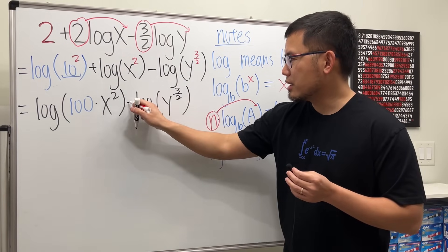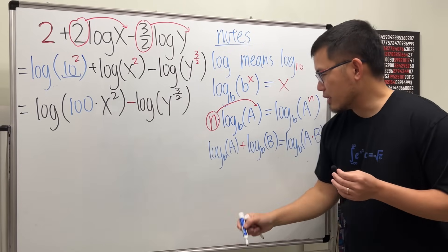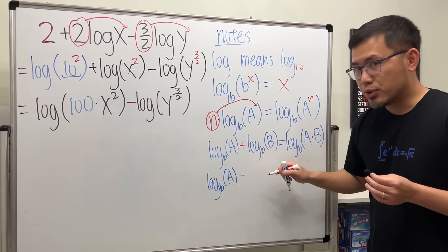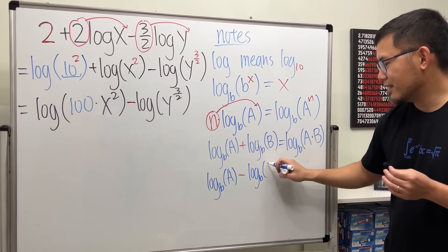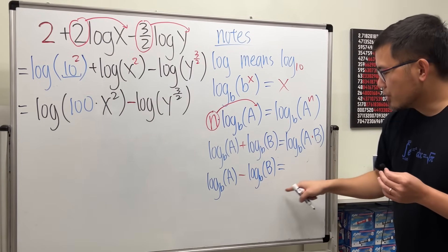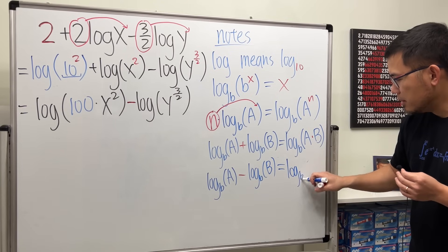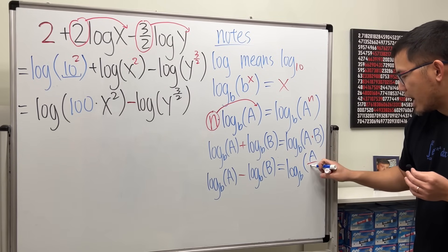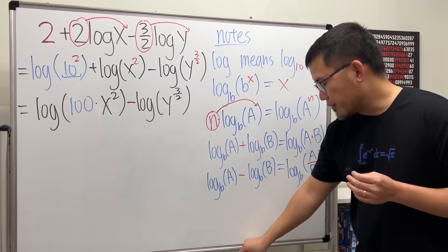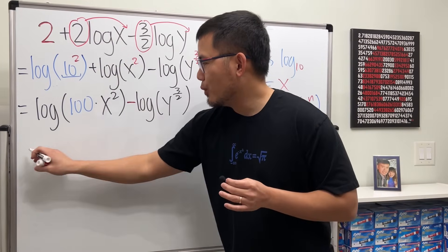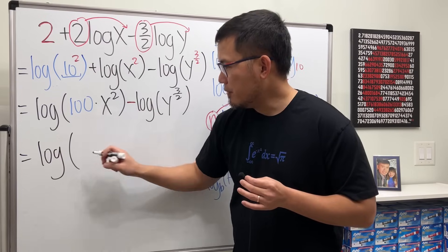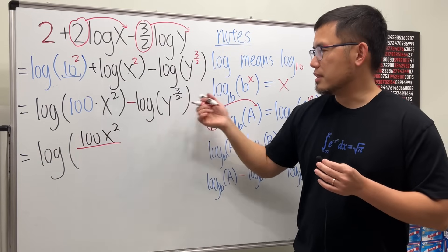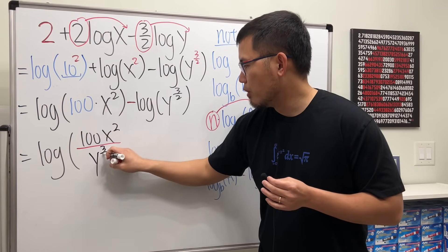Finally, we have a subtraction. When we have log base b of A minus log base b of B, we divide the insides: it becomes log base b of A divided by B. So combining everything, we get one logarithm with 100x squared over y to the 3 over 2 power. And that's the answer in fractional power form — we are done.